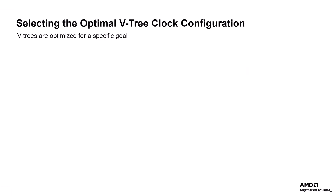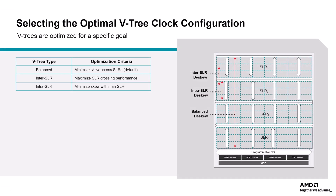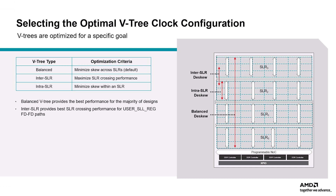Selecting the optimal V-Tree clock configuration is critical. There are three clock tree types optimized for specific QOR goals, and the default balanced clock tree does not always provide optimal performance. To maximize SLR crossing performance in SSI technology devices, a smaller clock insertion delay at the clock region boundary above and below the SLR crossings can be traded off against higher clock skew to other clock region rows, achieving maximum SLR crossing performance. The Vivado Placer supports user-selectable as well as automatic optimization of clock trees for SSI technology Versal devices. The balanced V-Tree type provides balanced intra-SLR and inter-SLR clock skew across all clock region rows, while the inter-SLR V-Tree type provides balanced...